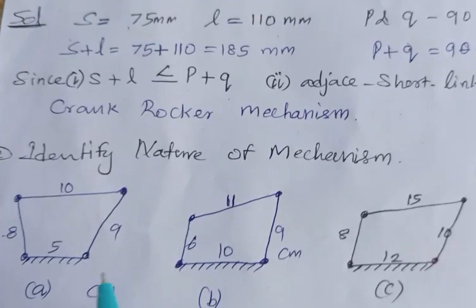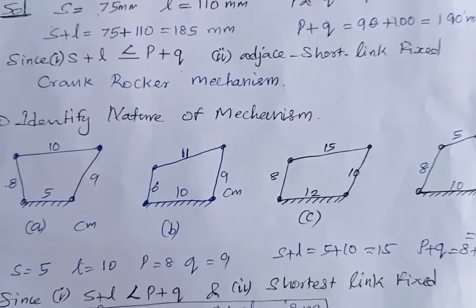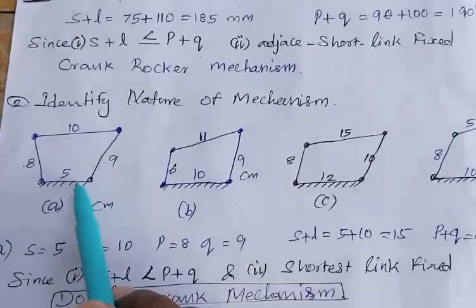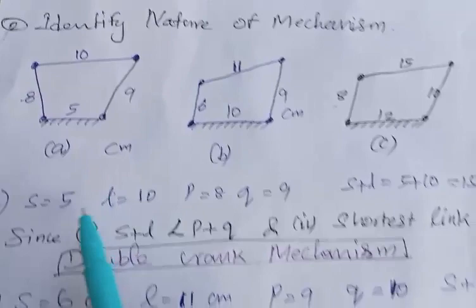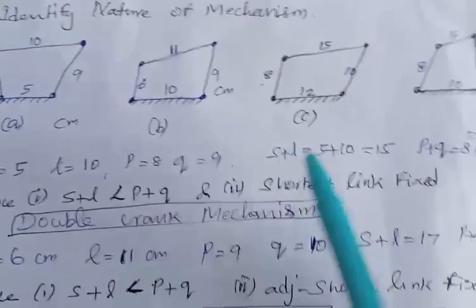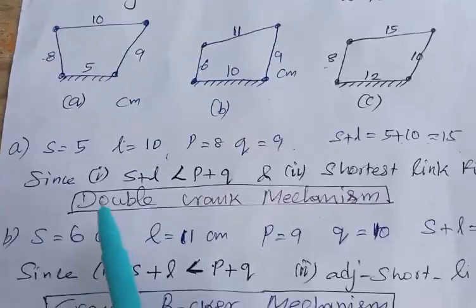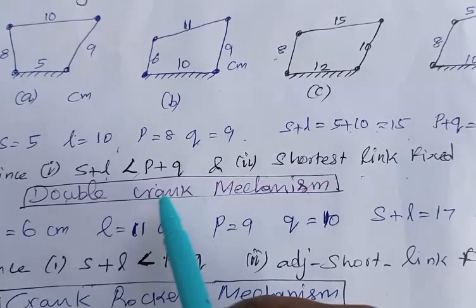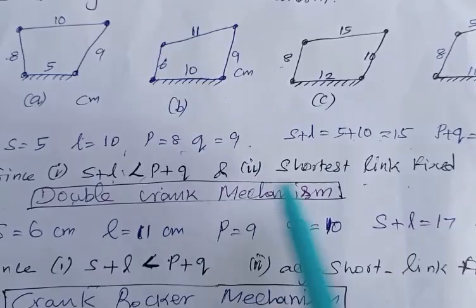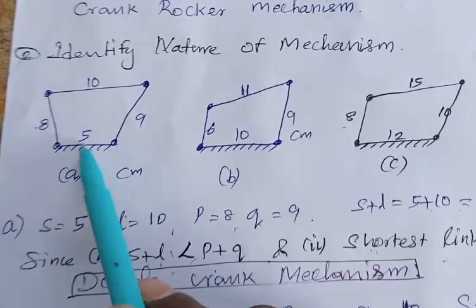Next, identify the nature of mechanism for figure A with link lengths 5, 8, 9, and 10 cm. Shortest link = 5, longest = 10, P = 8, Q = 9. S + L = 15, P + Q = 17. Since S + L ≤ P + Q and the shortest link is fixed, the mechanism is a double crank mechanism.